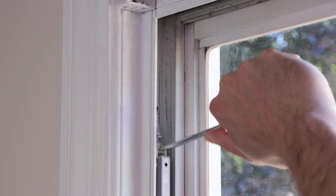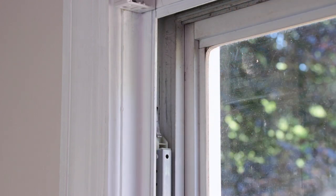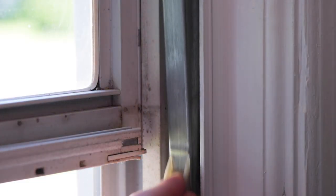Similar to removing the old channel balance, take the new balance and press down to allow the top attachment to hook underneath the takeout clip.